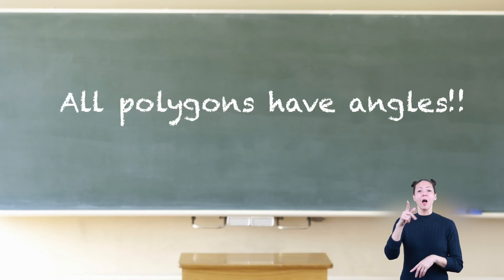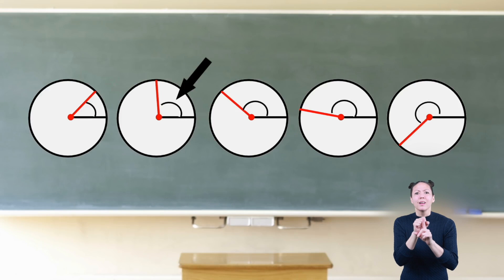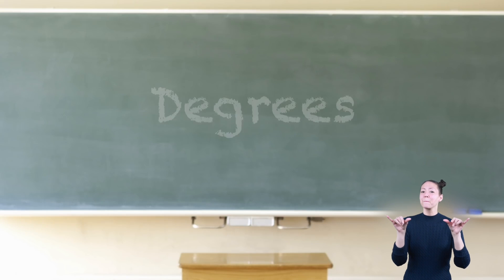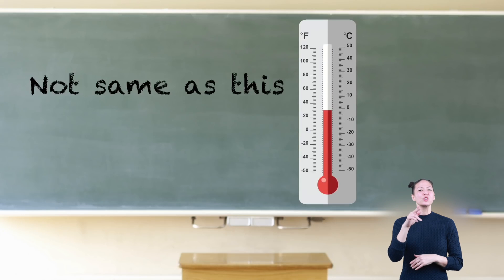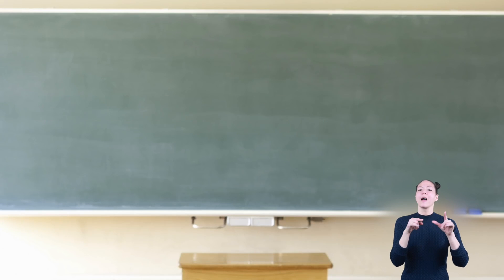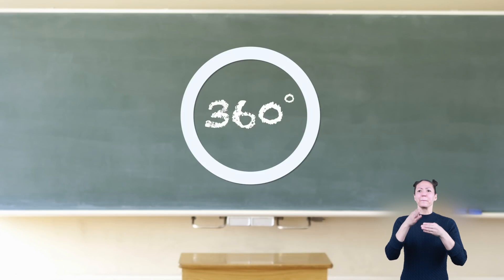All polygons have angles. Angles come in different sizes. The size of an angle is measured using a unit called degrees—not the same as measuring temperature. An angle can measure from zero to 360 degrees. A complete circle is 360 degrees.